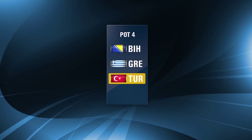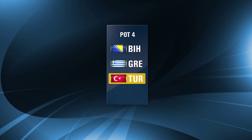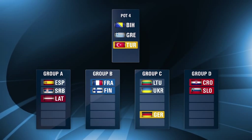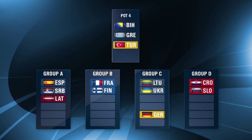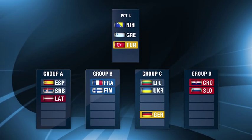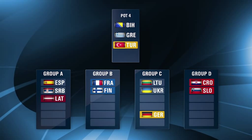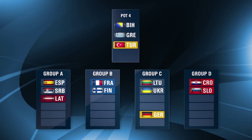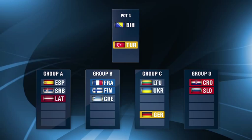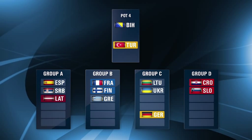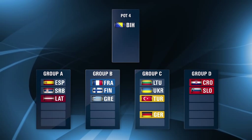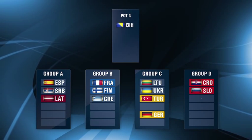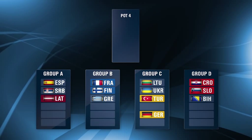For Pot 4, there are three teams as host country Latvia has already been drawn into Group A. Therefore, the other three countries will be drawn as normal with Turkey as a partner country going to the group with Germany. For example, Greece is selected first and goes to Group B. Turkey is selected next and has to go to Group C, and therefore Bosnia and Herzegovina goes to Group D.